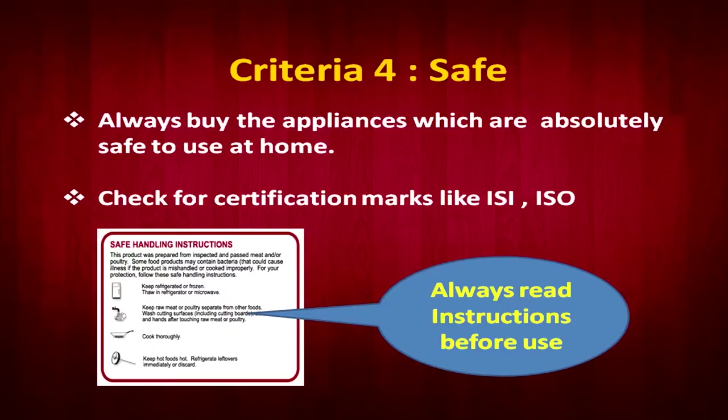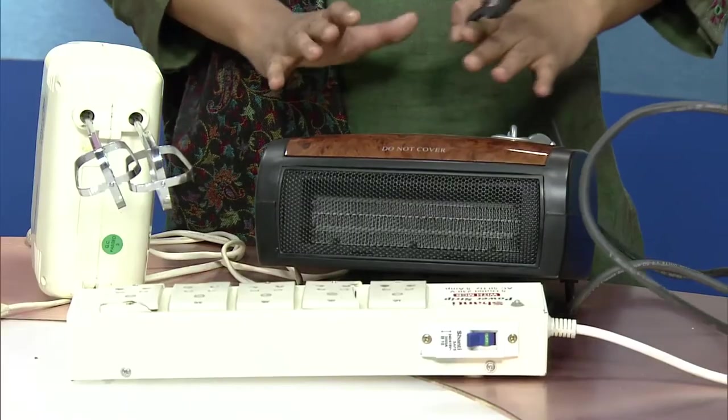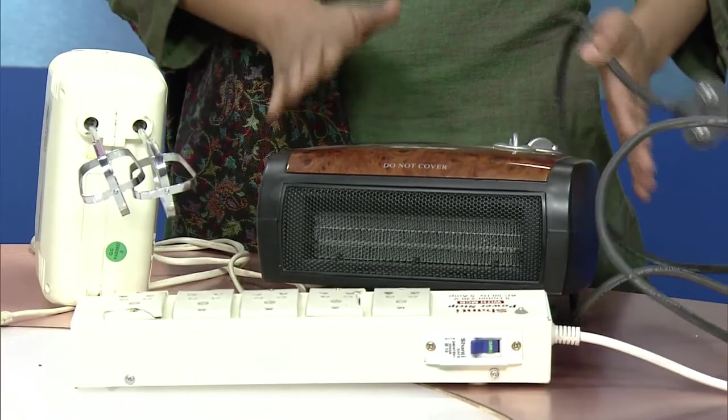Another very important criterion is safety. Whenever we purchase electrical appliances, we look for the standardization mark. We have the Bureau of Indian Standards and other standardization authorities that give their own safety marks. For example, this blower converts electric energy into heat energy, which creates a major danger of short circuit and fire. You need to look for the ISI mark on electrical appliances, which ensures the quality and safety of the product.